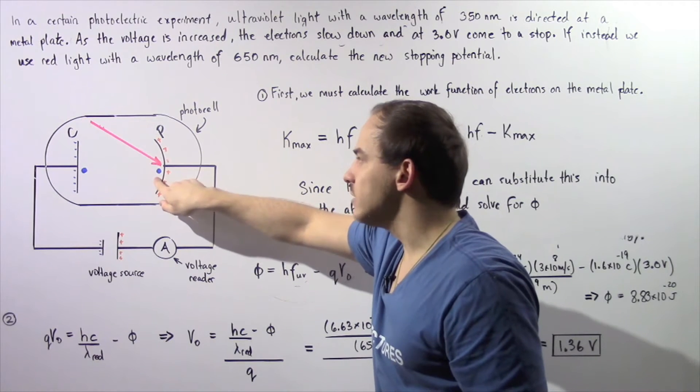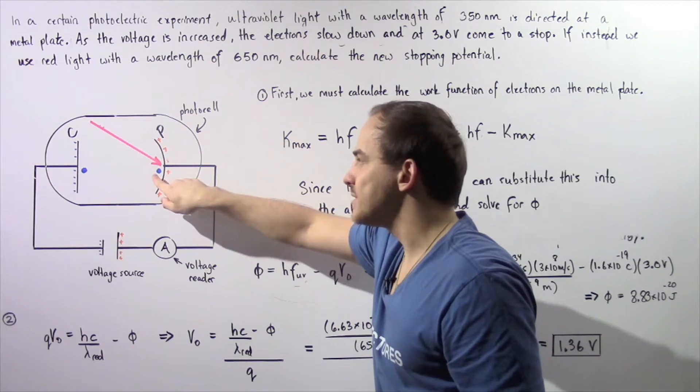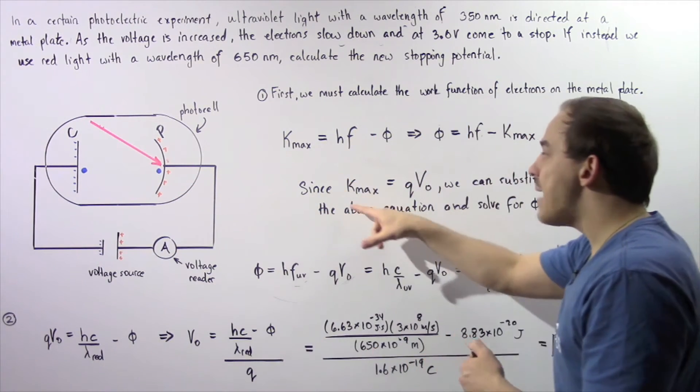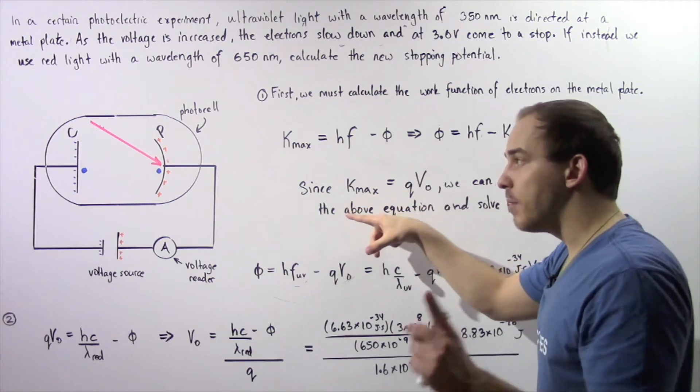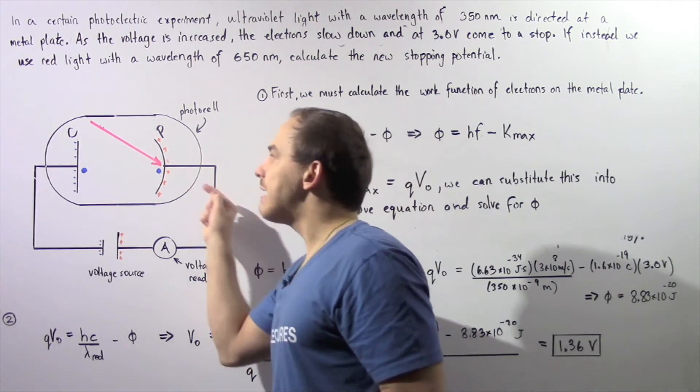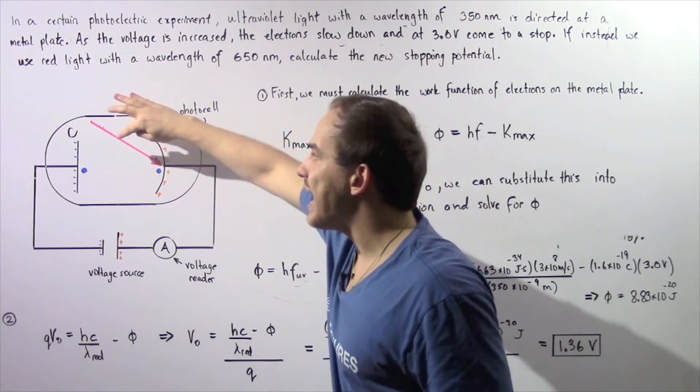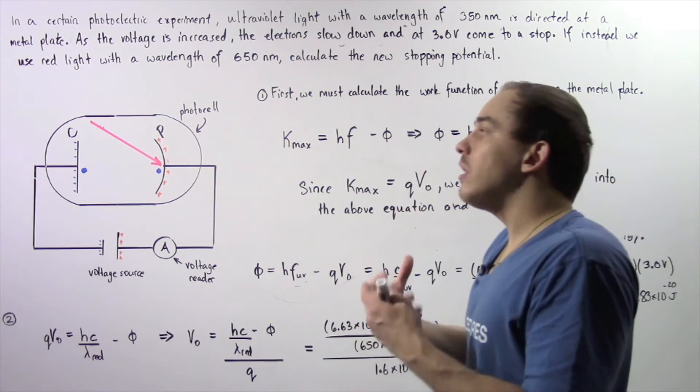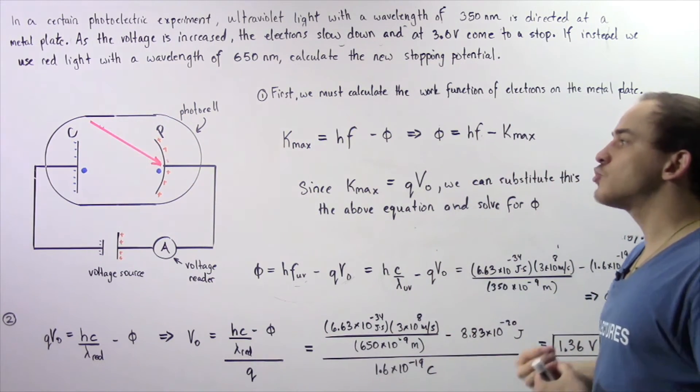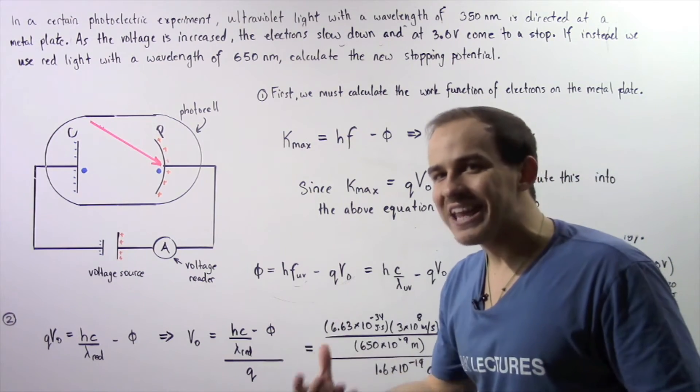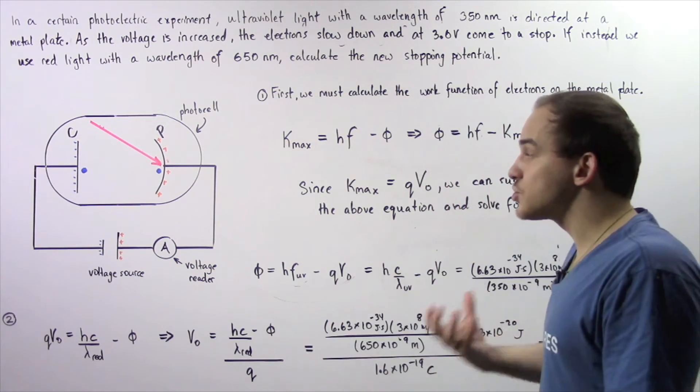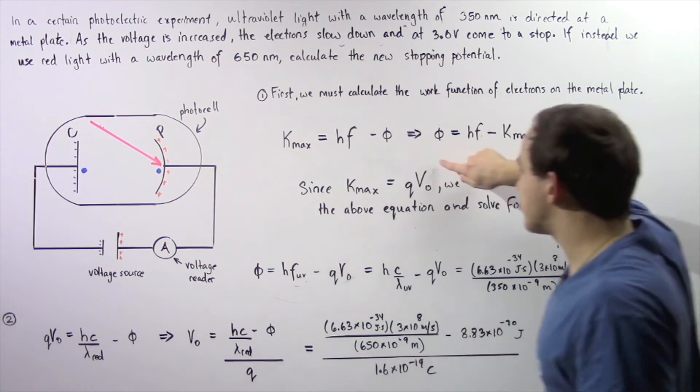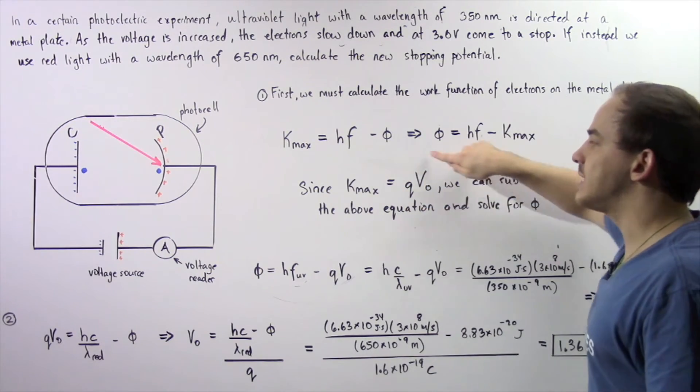So initially, when the electron is found at this position, it has a maximum kinetic energy. But as the electron travels across and eventually ends up at point C, all that kinetic energy is transformed into electric potential energy that is stored within this electric field. And that's where this quantity comes from.